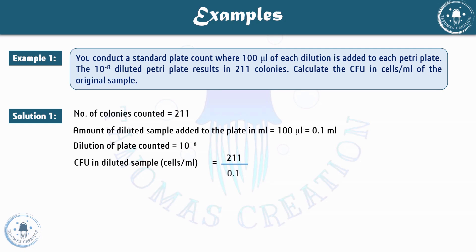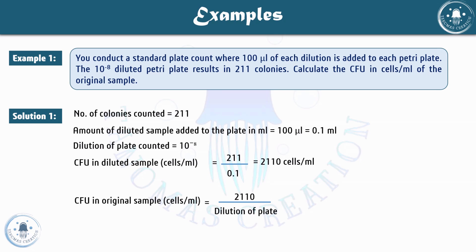For Step 1, CFU in diluted sample = 211 ÷ 0.1 ml = 2110 cells/ml. For Step 2, CFU in original sample = 2110 ÷ 10^-8 = 2110 × 10^8 cells/ml, which simplifies to 2.11 × 10^11 cells/ml. So the original sample has 2.11 × 10^11 cells per ml.